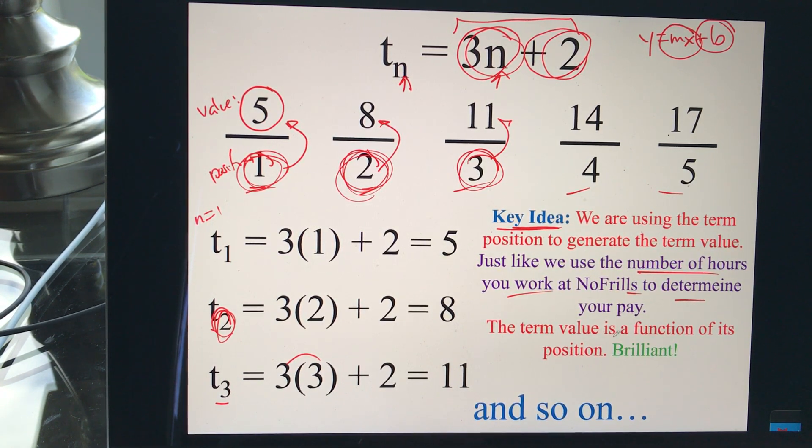So the same thing, we start with one thing and generate the other. So the term value is a function of the position. So this value is a function of the position that it's in, just like your pay at No Frills is a function of how many hours you work. So same structure that we've seen before. And, of course, it's brilliant.